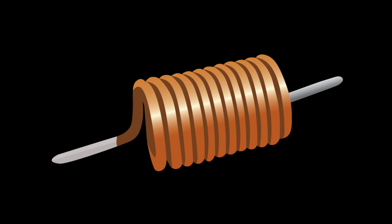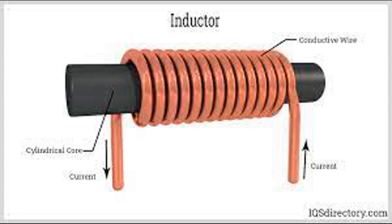The magnetic field lines form closed loops around the coil. The crucial aspect of the principle lies in what happens when the current through the coil changes. If the current increases or decreases, the magnetic field around the coil also changes. When this change occurs, the magnetic field lines expand or contract, respectively, and this change in magnetic flux induces an EMF or voltage across the coil.